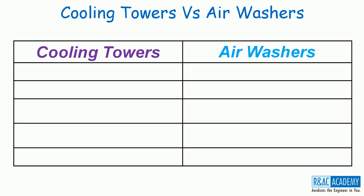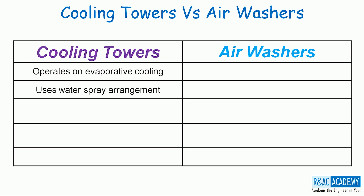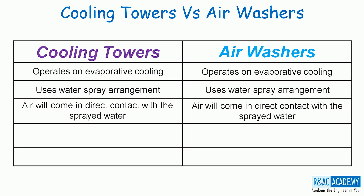The typical characteristics of a cooling tower are: it operates on evaporative cooling principle, it uses water spray arrangement, and the air in cooling towers will come in direct contact with the sprayed water. Interestingly, the typical characteristics of an air washer are similar to that of the cooling tower.